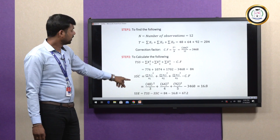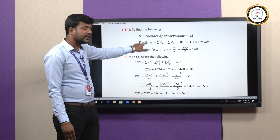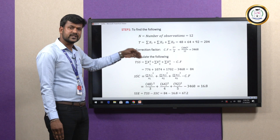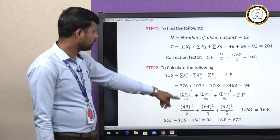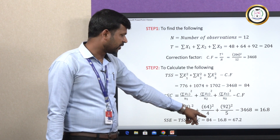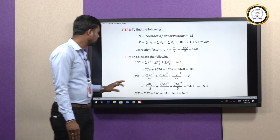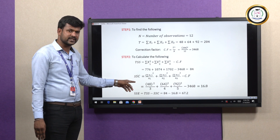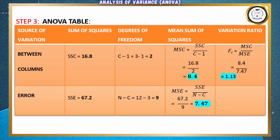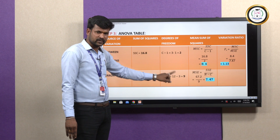That is the total sum of squares. We need to find SSC — sum of squares for columns. It has the formula: square each column total and divide by the number of samples in that column. For example, for the first column with sum 48: 48² / 3, then 64² / 4, plus 90² / 5, then subtract the correction factor. SSC = 16.8. Error SSE = TSS − SSC = 67.2. In the ANOVA table, between columns SSC, the degree of freedom C − 1 = 3 − 1 = 2, and N − C = 12 − 3 = 9.